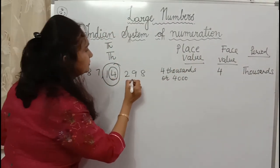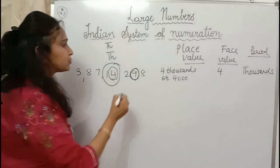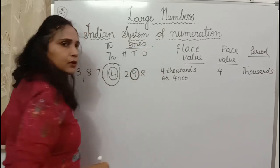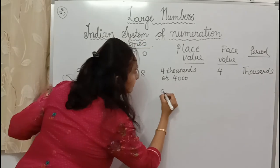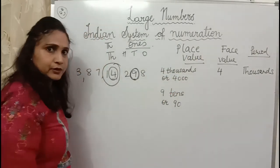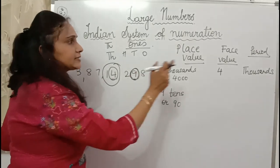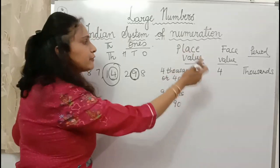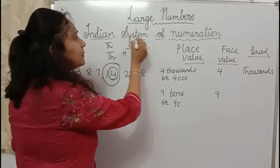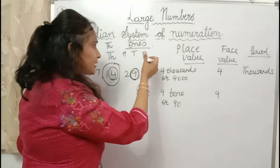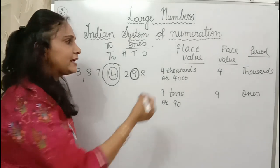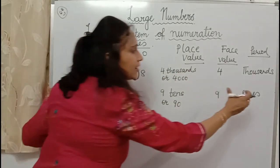Now we have this number 9. Nine is at which place? Tens place. So the place value of 9 is 9 tens, or 90. This is the place value — don't confuse it with the period. Face value remains the same: 9 will remain 9 only. The period of this 9? It comes in the ones family, so the period is ones. Most children get confused and write tens — but no, the period is ones. Tens is the member of the family; ones is the family name.